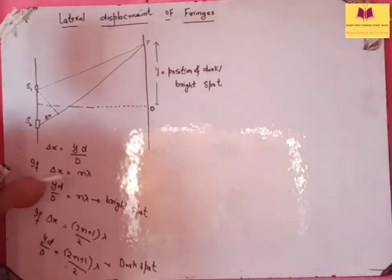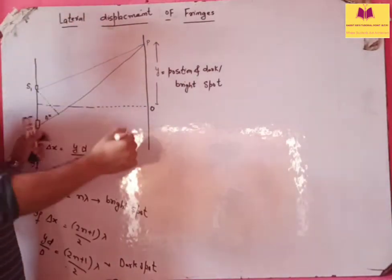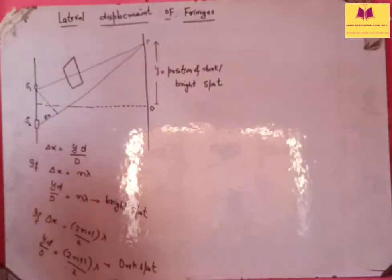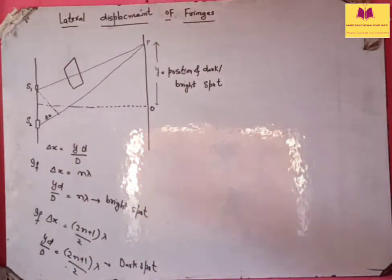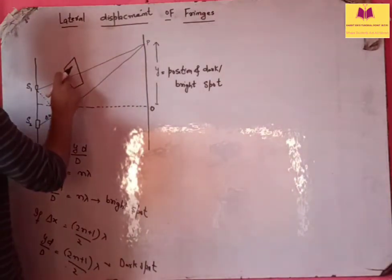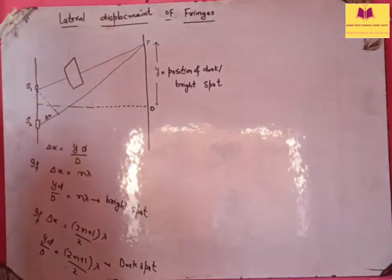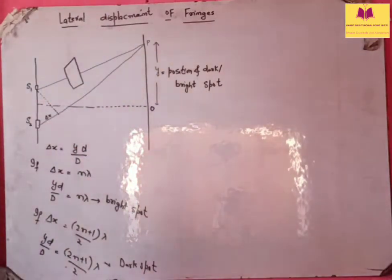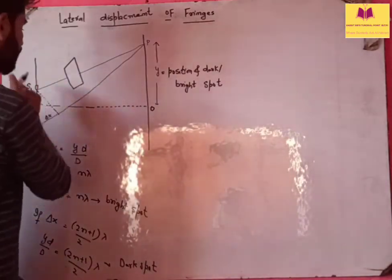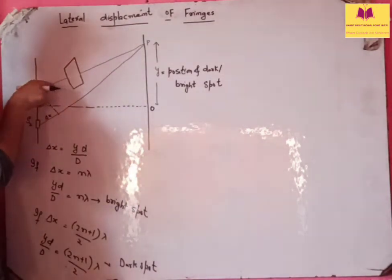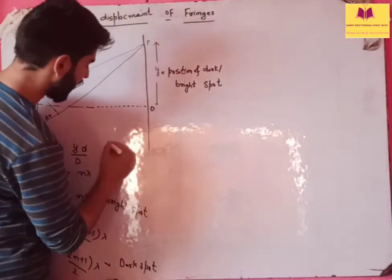Now, what will happen if I do one thing — agar mein ek glass slab ko yahan pe rakh dun, like this, in the path of the light ray that is going from S1? I place a glass slab in the path of this light ray. Now light has to pass through this glass slab as well. And you know that the speed of light is maximum in vacuum, and in all other mediums it decreases.